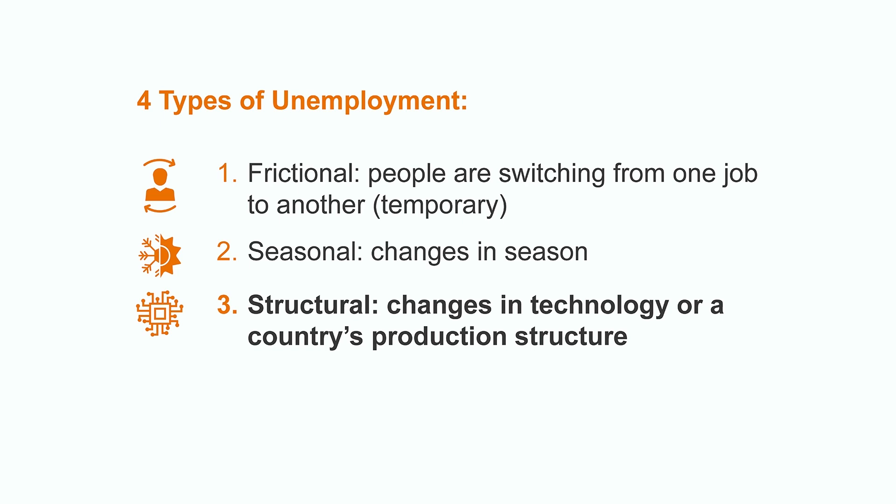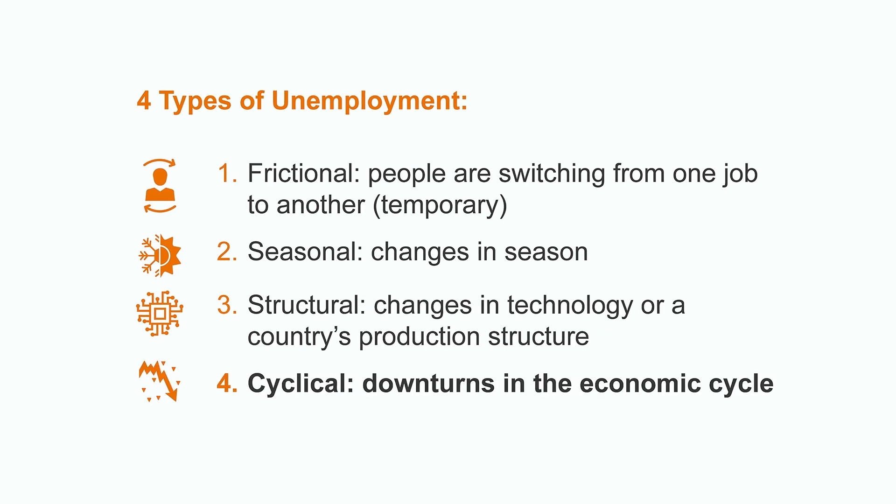For example, if all supermarkets turned into smart stores without cashiers, then cashiers would be structurally unemployed due to a technological innovation. Finally, cyclical unemployment is associated with downturns in the economic cycle such as recessions. It is in these moments when aggregate demand is depressed, production decreases, and consequently so does employment. The biggest most recent example was the pandemic, which led to a substantial rise in global unemployment due to the cessation of activities and the indefinite closure of offices and stores.